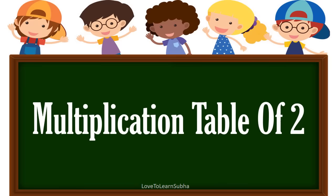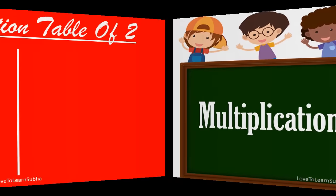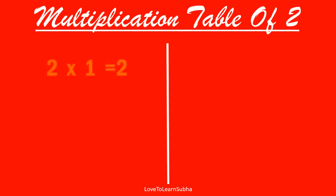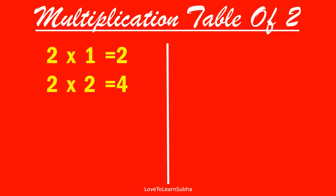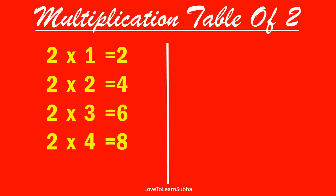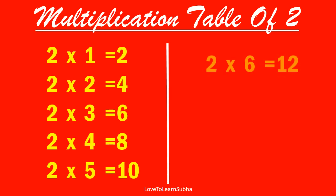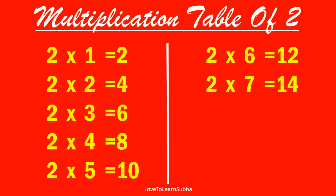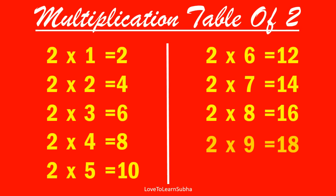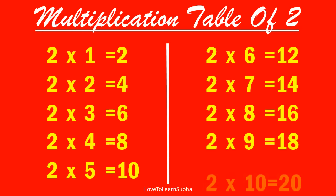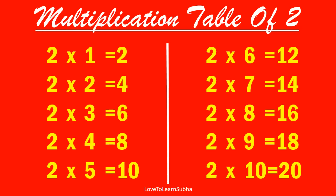Multiplication table of 2. 2 one is 2, 2 two is 4, 2 three is 6, 2 four is 8, 2 five is 10, 2 six is 12, 2 seven is 14, 2 eight is 16, 2 nine is 18, 2 ten is 20.